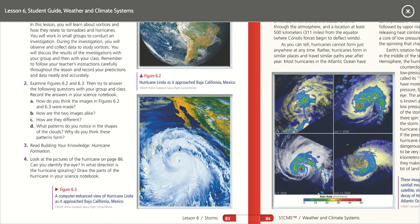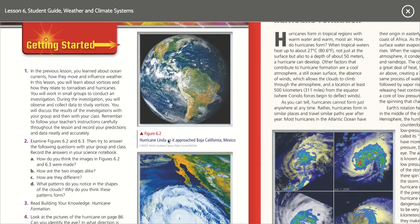How are they alike? Well, they're of the same thing, but one's closer than the other. How are they different? We just said that. What patterns did you notice in the shapes of the clouds? It looks like they go clockwise here, and let's see if it looks clockwise up here — oh, maybe.